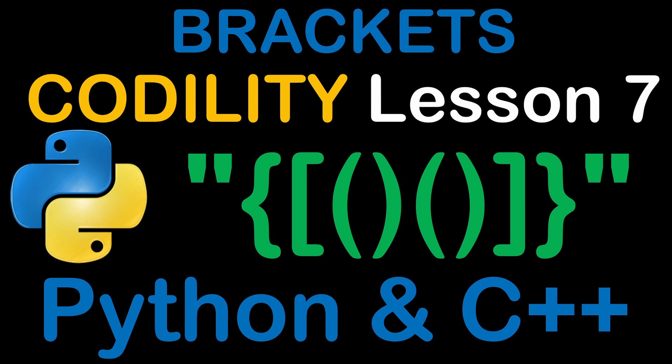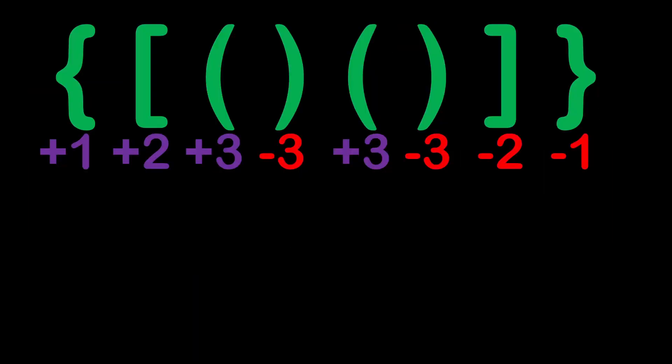For a string to be properly nested we have to have all the opening characters — braces, brackets, or parentheses — properly closed at different levels as shown in the example. To do this we are going to assign an index for each character type: braces will be 1, brackets will be 2, and parentheses will be 3. The sign of the index will designate whether it's an opening or closing character, with negative indexes for closing characters.